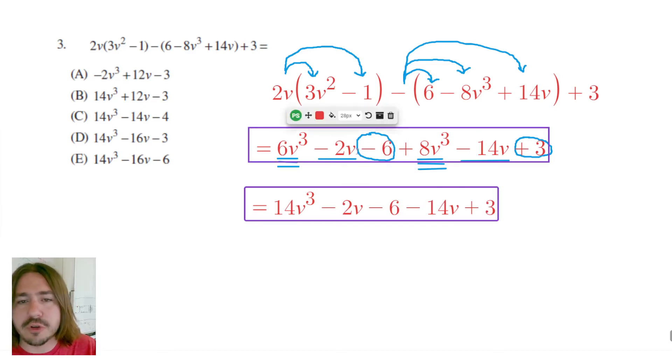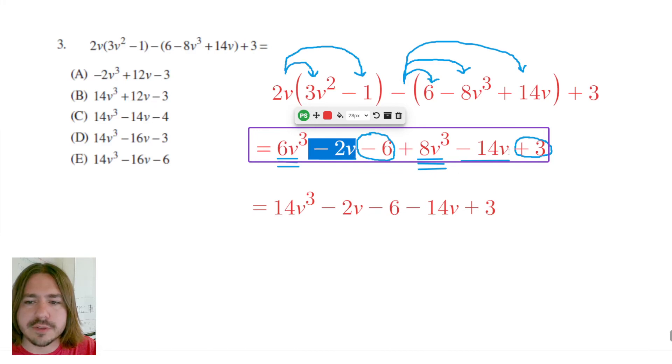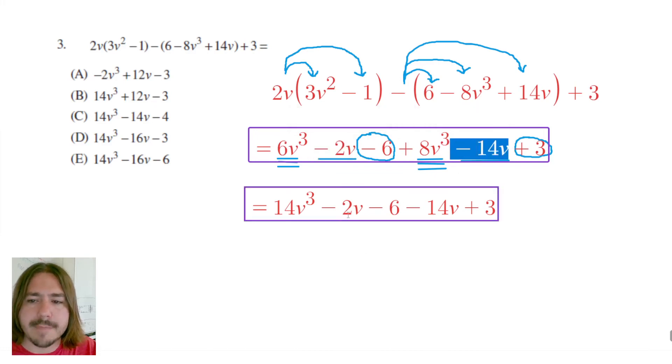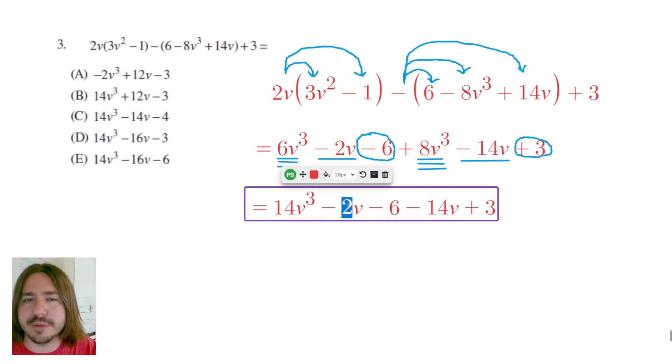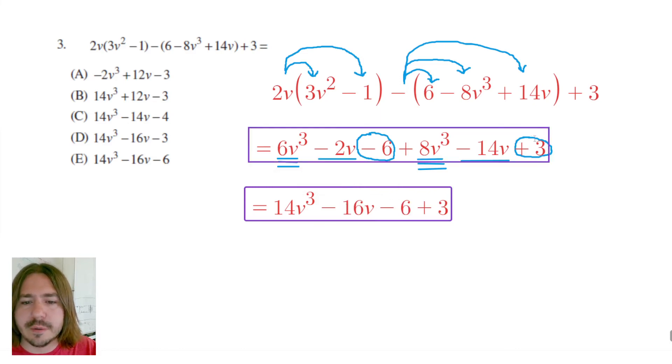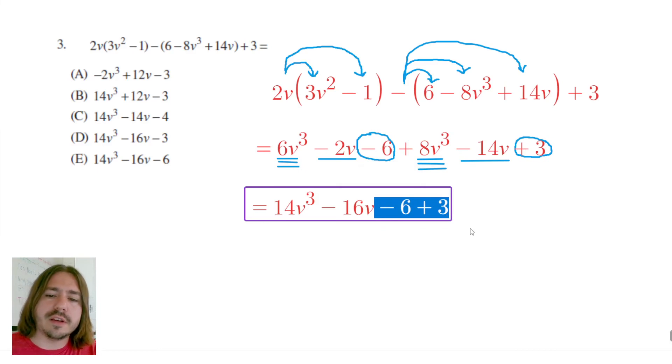Like I said before, there's no quadratic terms, so I don't have to worry about that. I do have two linear terms, negative 2v minus 14v. So negative 2 minus 14 would be negative 16v. And finally, I have got negative 6 plus 3. So negative 6 plus 3 would be negative 3.